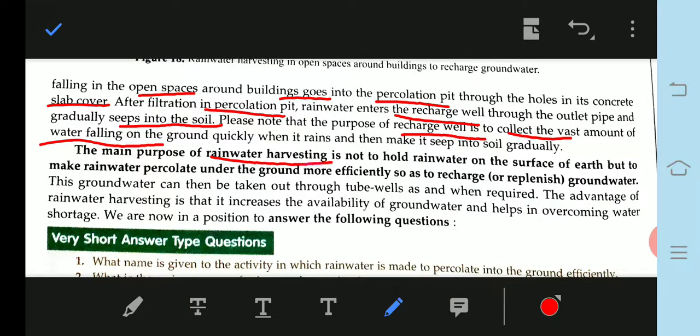The main purpose of rainwater harvesting is not to hold the rainwater on the surface of the earth, but to make the rainwater percolate under the ground more efficiently so as to recharge groundwater.